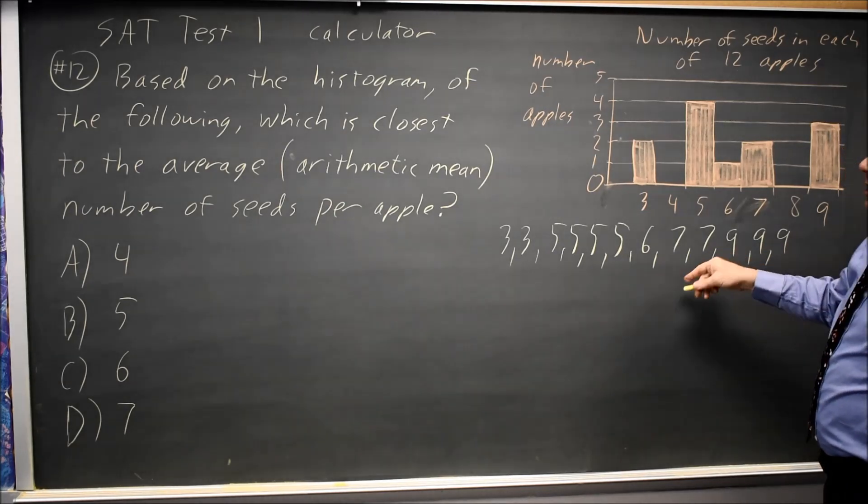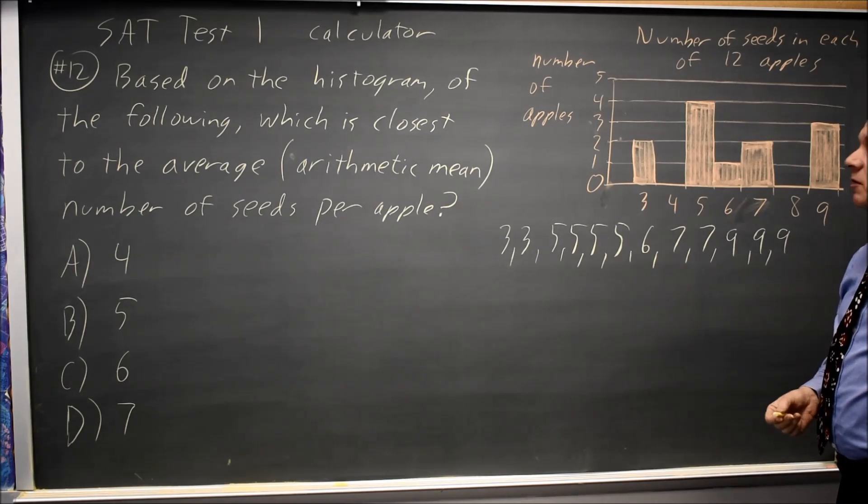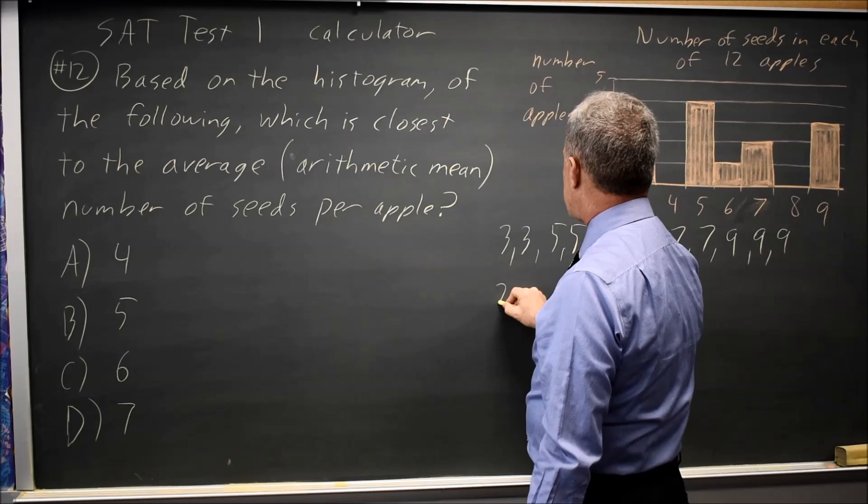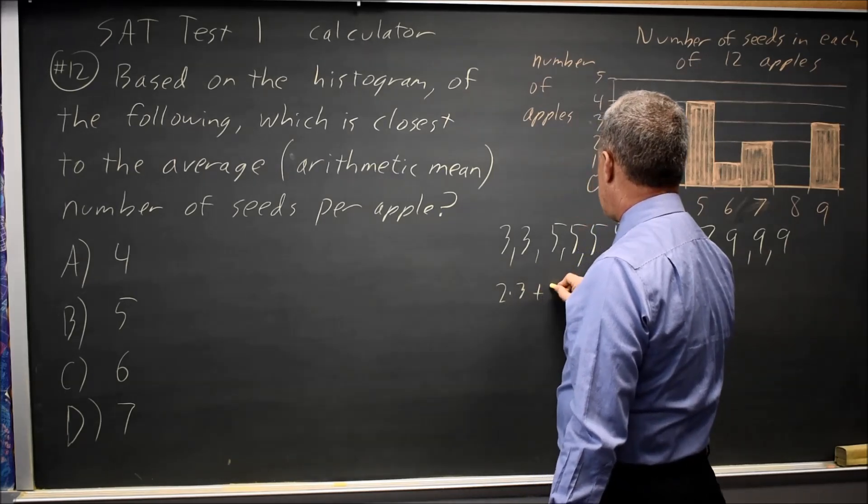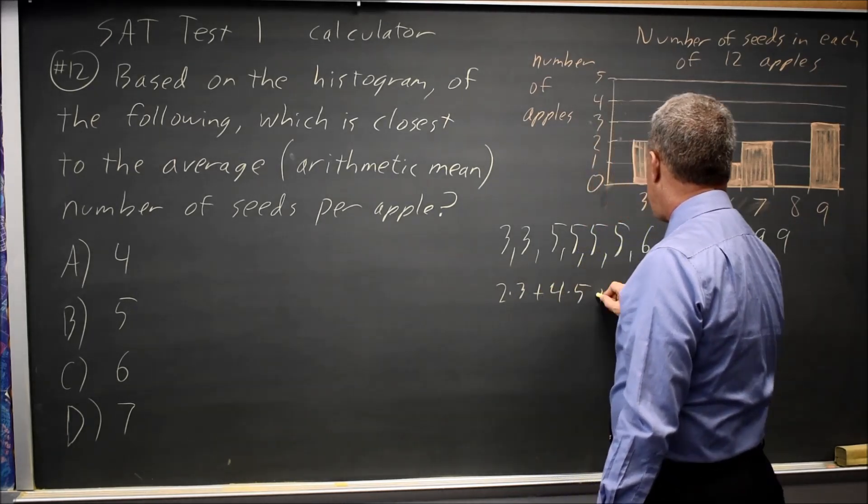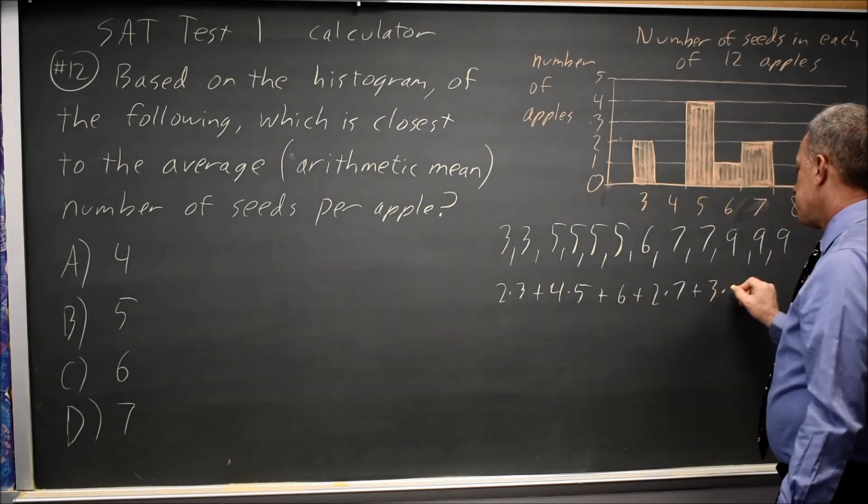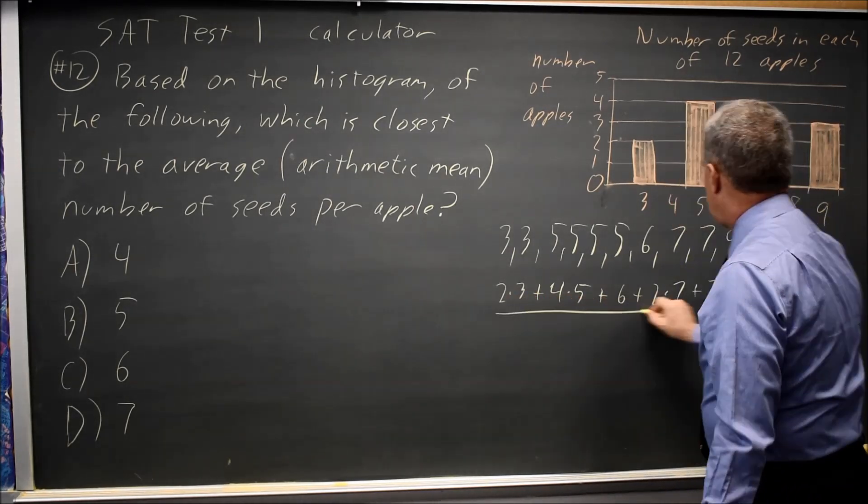And the question is, what does the average arithmetic mean, which means add these up and divide by 12. So that is 2 times 3 plus 4 times 5 plus 6 plus twice 7 plus 3 times 9, all divided by 12.